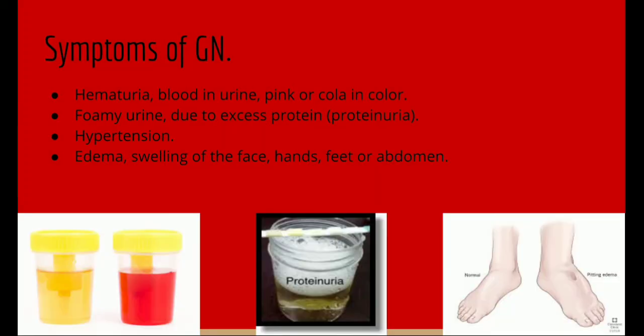Symptoms of GN include hematuria, or blood in the urine, which would cause a pink or cola color; foamy urine due to excess protein, or proteinuria; hypertension; and edema — swelling of the face, hands, feet, or abdomen.